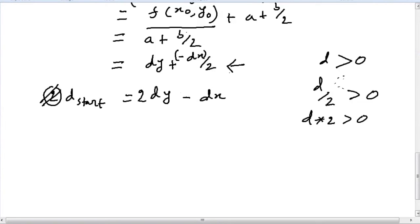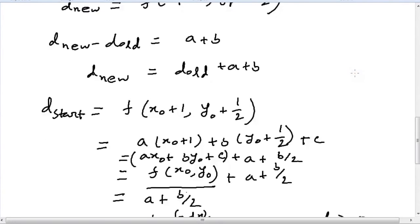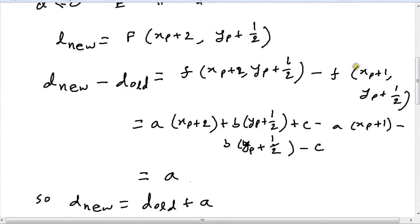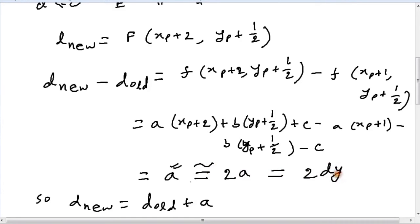So now that we have to multiply the values of d_start by 2, we have to make some changes in the equations above as well. For instance, if we chose pixel E, we had our difference between d_new and d_old to be equal to a. Now this will have to become 2 times a, or we can write it as twice dy.